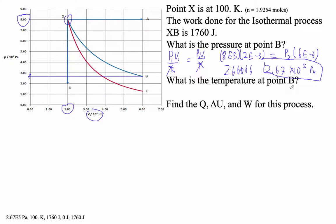I doubt they're going to ask you for what the temperature is at point B. But remember, isothermal is the same temperature. So the temperature at point B is 100 kelvins.